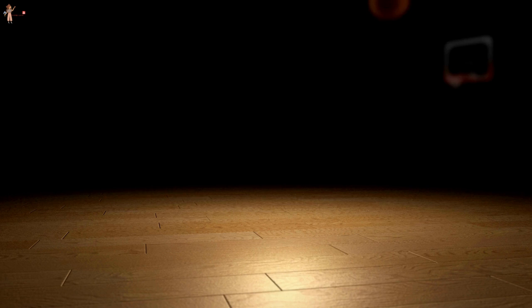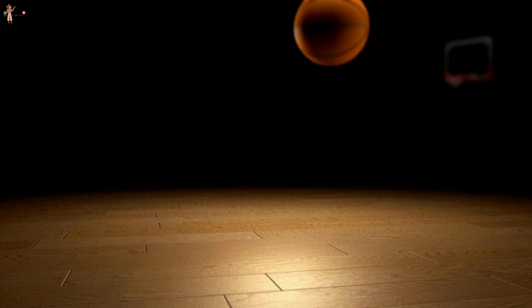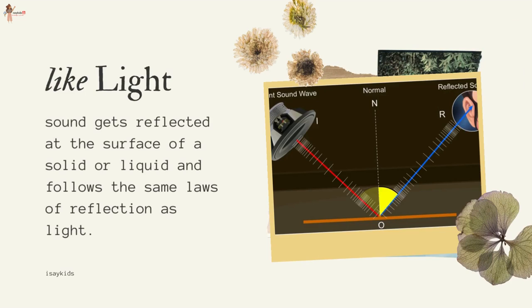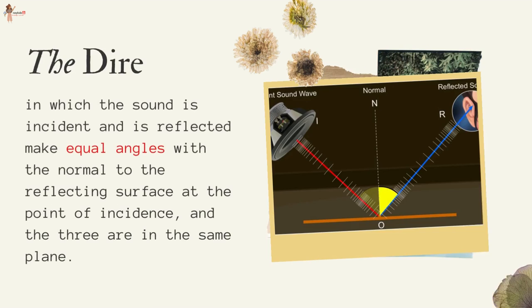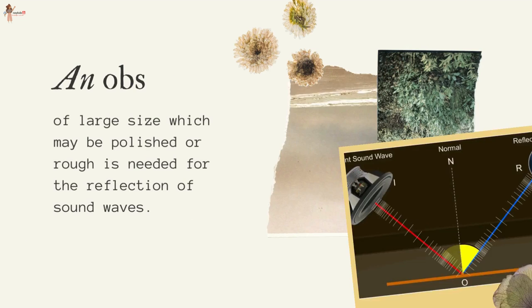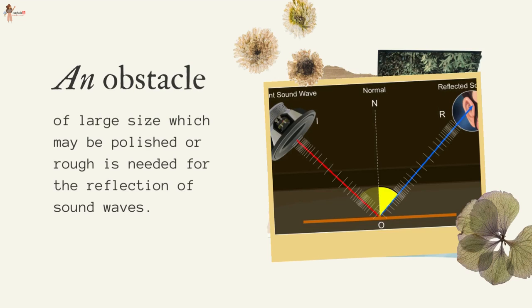Reflection of sound: Sound bounces off a solid or liquid like a rubber ball bounces off a wall. Like light, sound gets reflected at the surface of a solid or liquid and follows the same laws of reflection. The directions in which the sound is incident and is reflected make equal angles with the normal to the reflecting surface at the point of incidence, and the three are in the same plane. An obstacle of large size, which may be polished or rough, is needed for the reflection of sound waves.